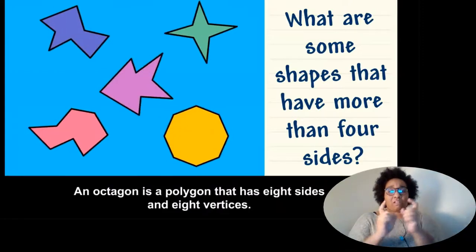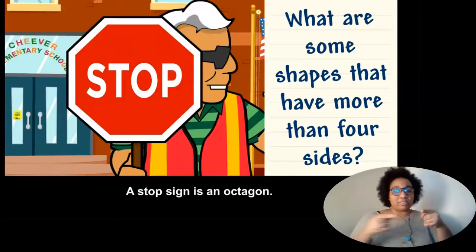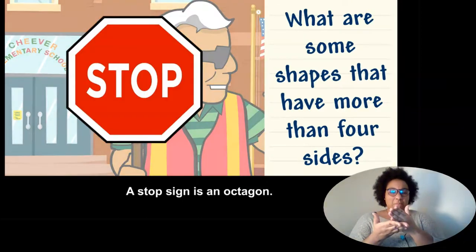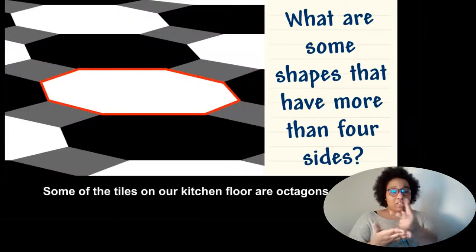An octagon is a polygon that has eight sides and eight vertices. A stop sign is an octagon. Some of the tiles on our kitchen floor are octagons too.